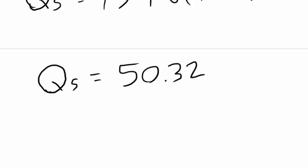So we have found our equilibrium price and quantity. They would charge $1.22 and produce 50.32 units of the good for the market to meet demand. That concludes this video on equilibrium supply and demand.